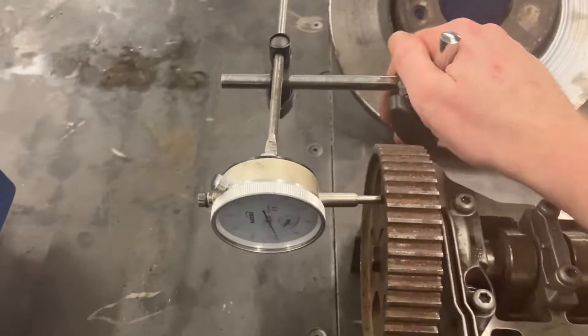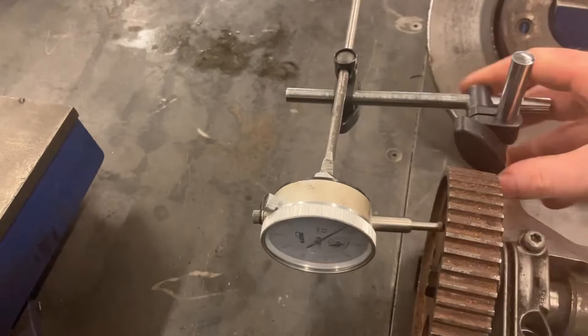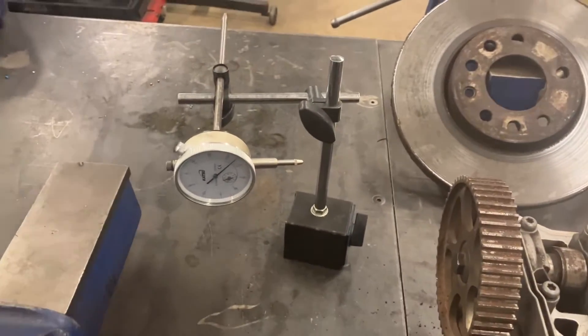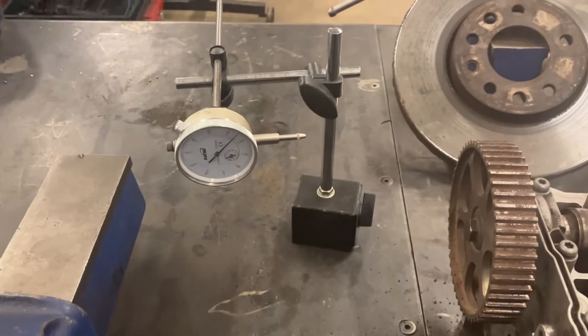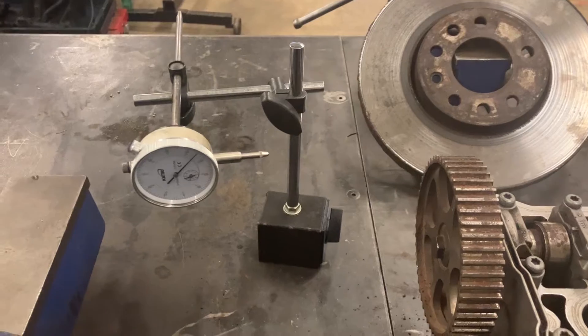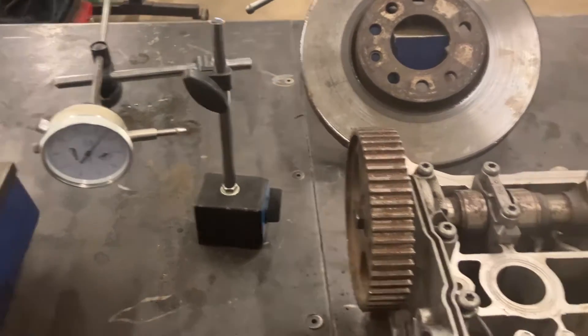Hi everyone, just a quick video on the DTI gauge - what it is, what it does, and how we use it in the motor vehicle industry. First of all, DTI gauge is a dial test indicator and it's a measuring device to check for movement, distortion, and play in various motor vehicle components, some of which I've got on the bench here.